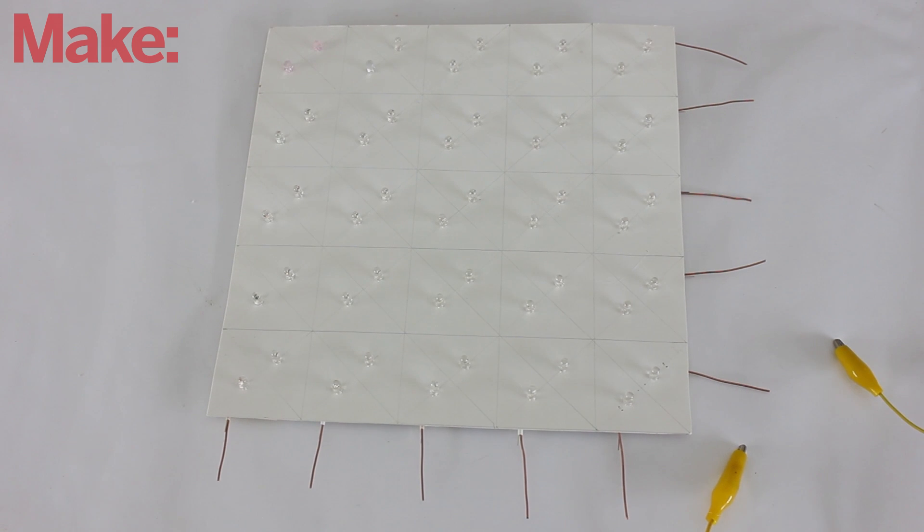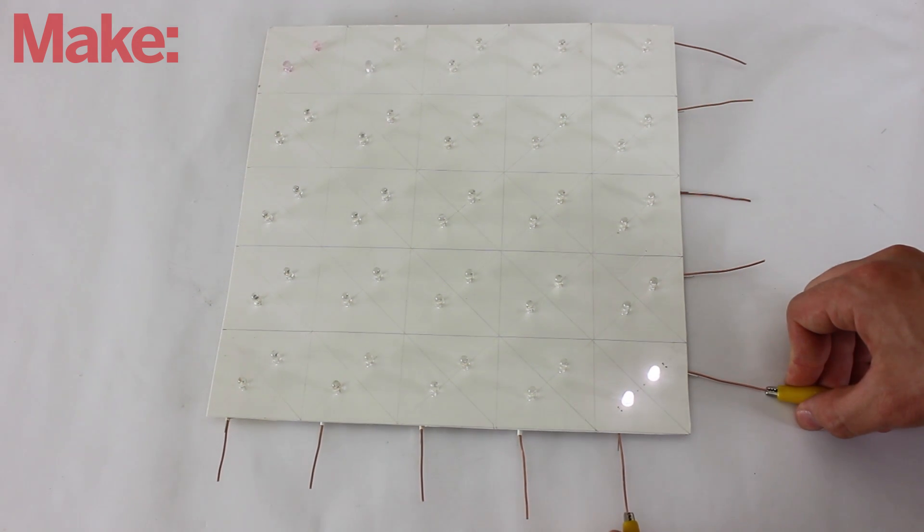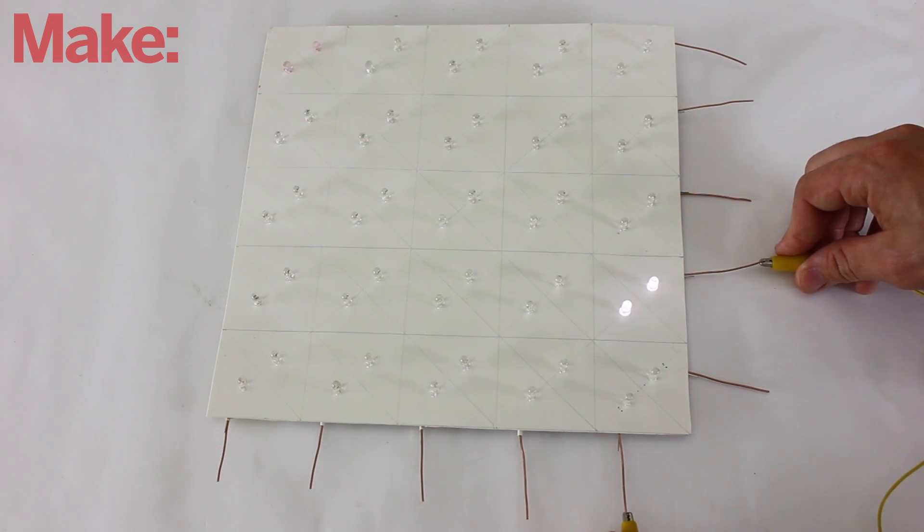You should now have a functioning LED matrix. To test it, take a 3 volt battery and connect the positive wire to one of the rows and connect the negative wire to one of the columns. The LEDs in the intersecting square should light up.